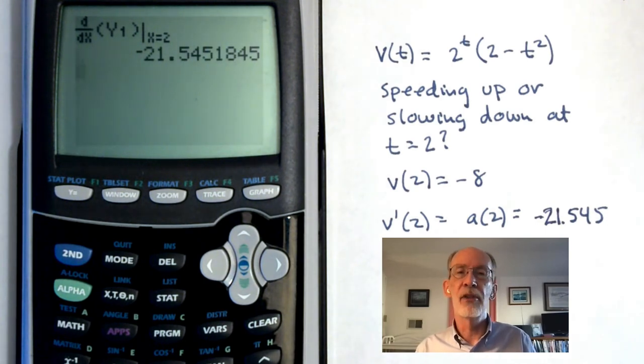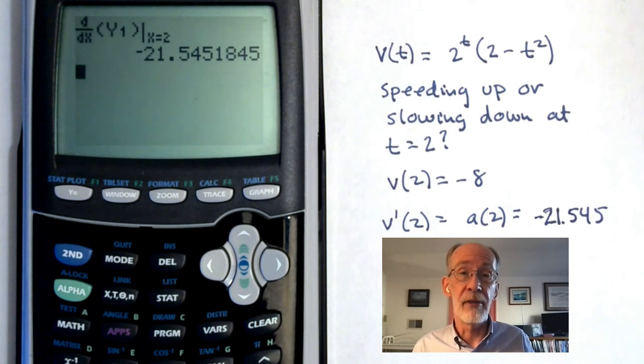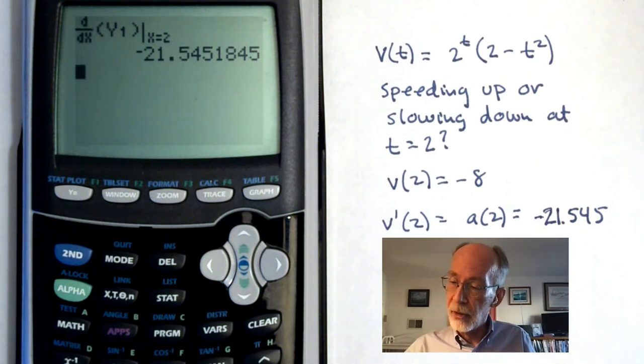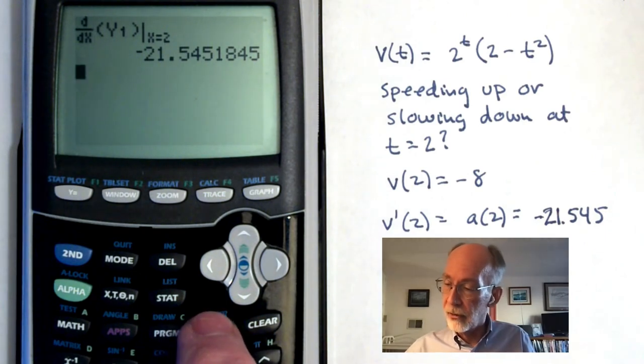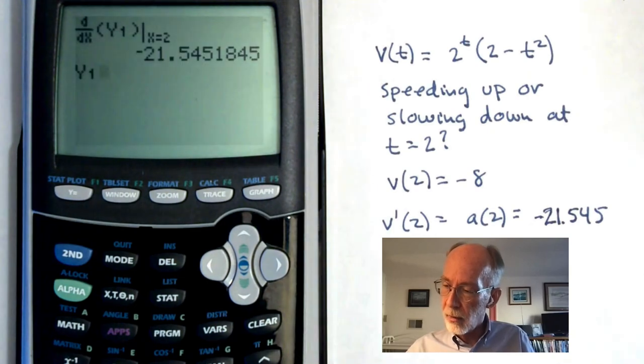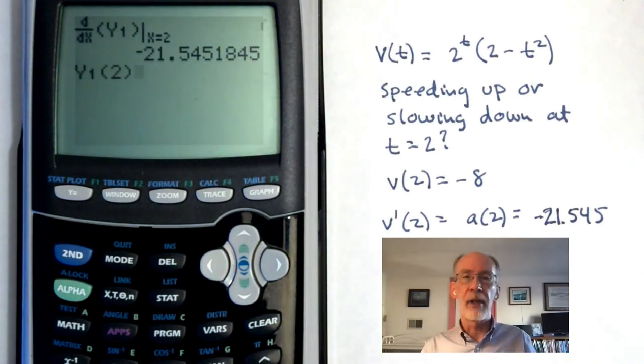So again, if you have multiple instances where you're making use of some function, you're using it in different commands or for different values of the input variable, this can be quite a convenience. This also allows you to evaluate the function itself. So if we were too lazy to plug 2 into the original velocity or if it were just an ugly function, we can go grab the y1 again. So that's vars yvars function y1. Ask it for y1(2). And there's the negative 8 as well.